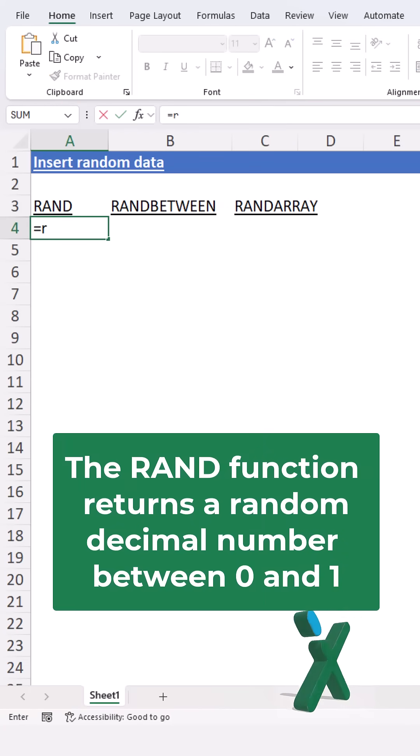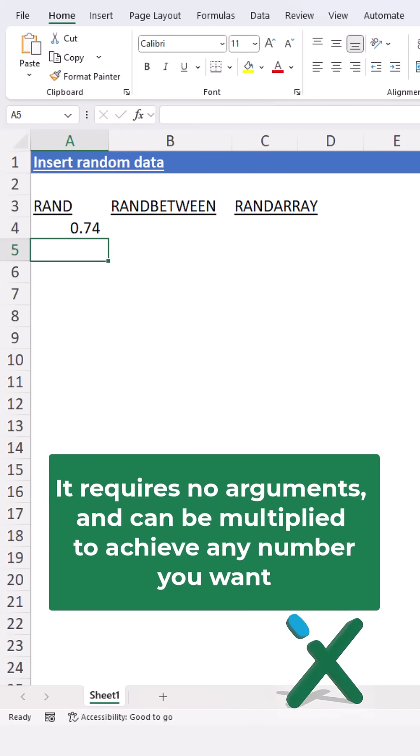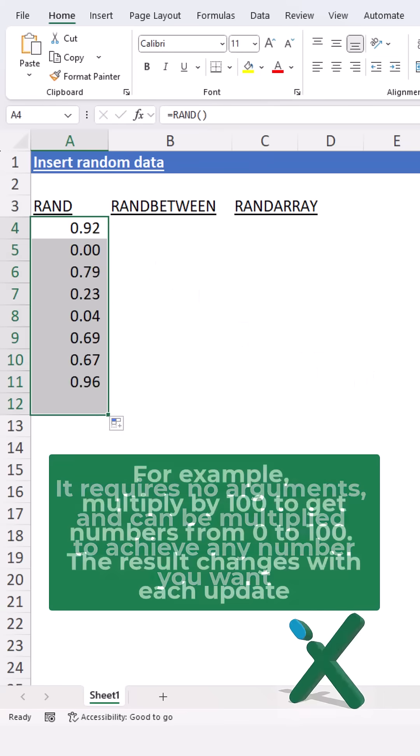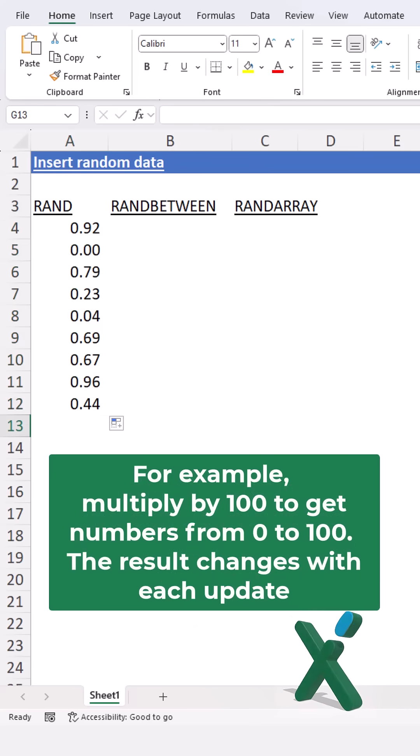The RAND function returns a random decimal number between 0 and 1. It requires no arguments and can be multiplied to achieve any number you want. For example, multiply by 100 to get numbers from 0 to 100.